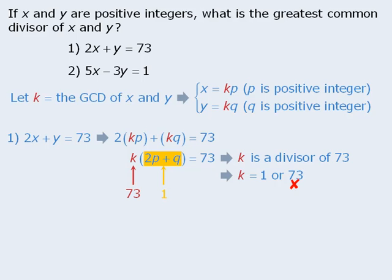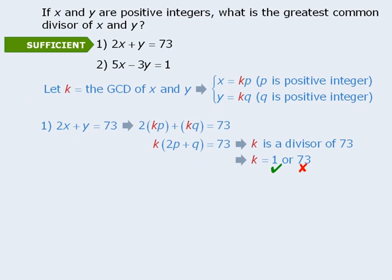However, it is possible for k to equal 1, which means k must equal 1, which means statement 1 is sufficient.